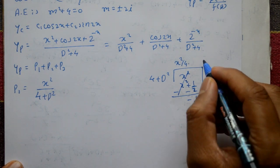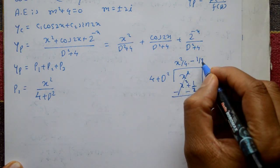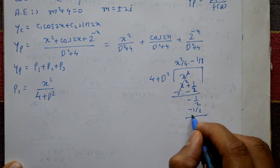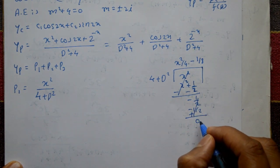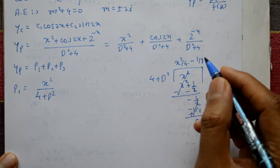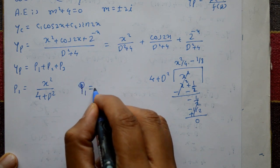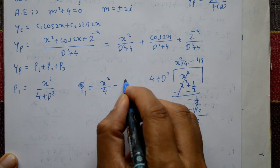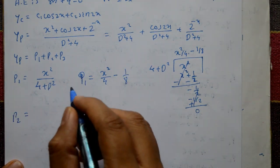Continuing the division: change sign gives -1/2. Cancel. Next term required is -1/8, since 4 × (-1/8) = -1/2. The remainder is 0. Therefore P1 = x²/4 - 1/8.